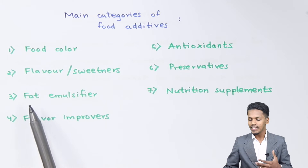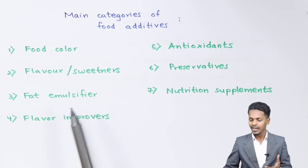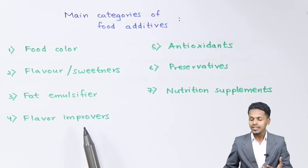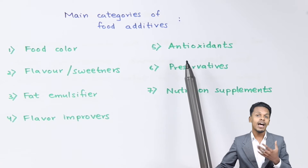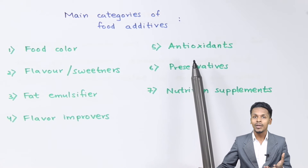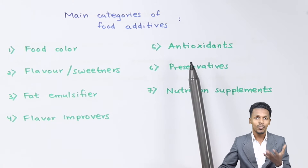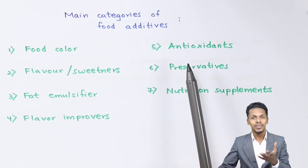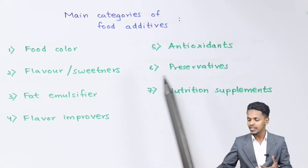The next categories are fat emulsifiers and flavor improvers. Antioxidants are also main important chemicals used in the food packaging industry and to preserve foods.